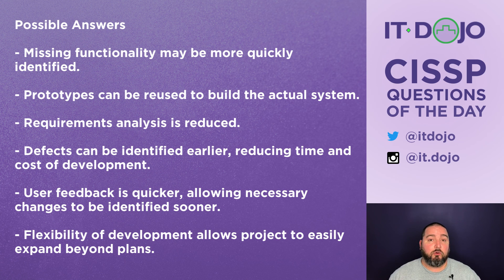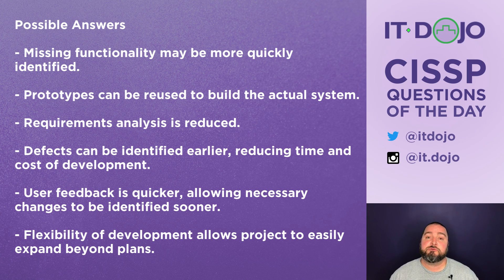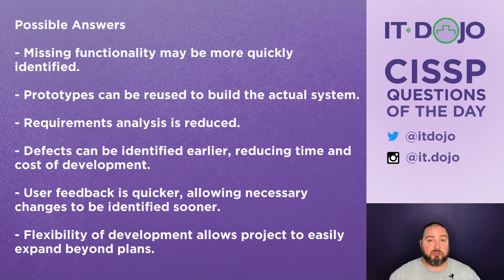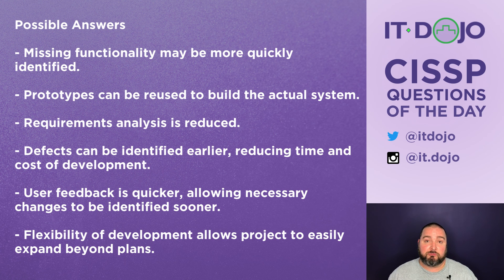The prototyping model can be broken into four basic phases. First, identify the software requirements. Second, build a prototype. Third, give it to the user, let them use it, and get their feedback. Fourth, revise the prototype based on that feedback. You then repeat steps three and four for however many iterations are necessary to produce a finished product that's valuable and usable to the client.